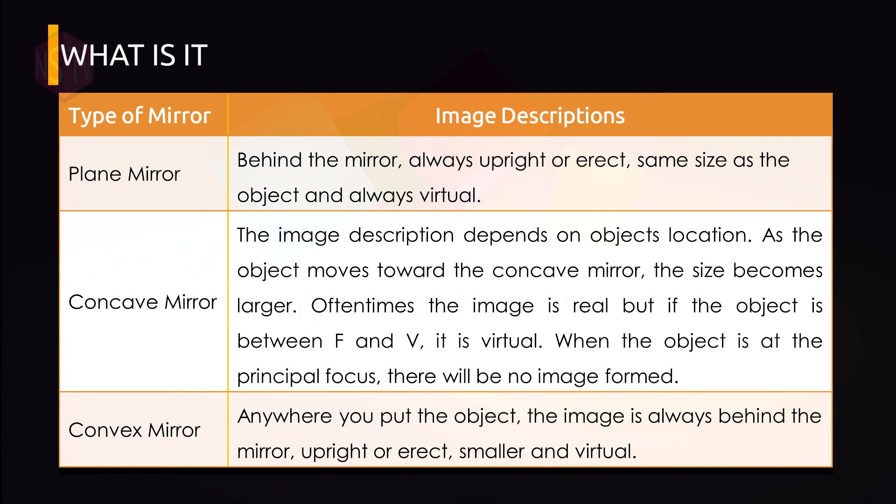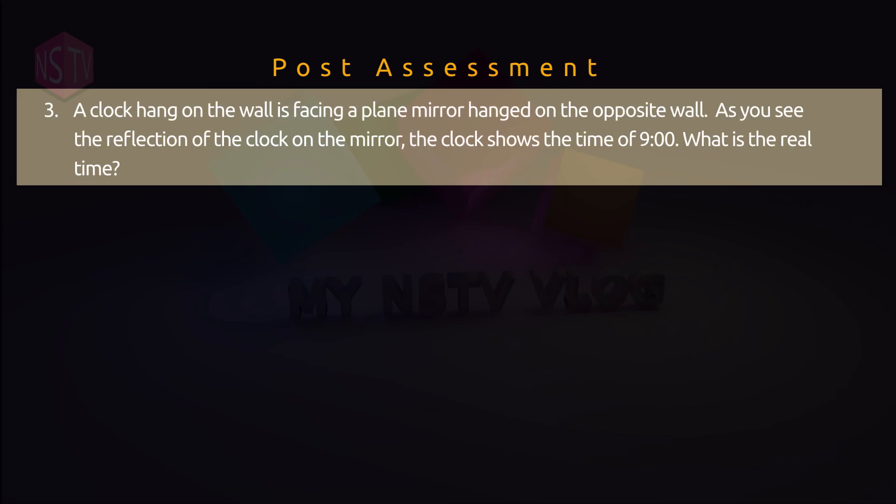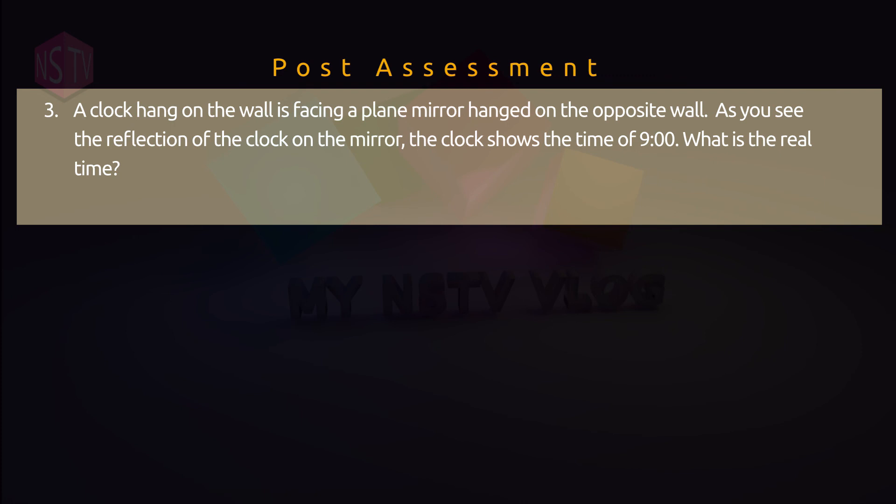So if you really understood the topic, let's have a short evaluation. So can you get your post-assessment in Science 10, Module 3? Use the answer sheet provided. So this is a bonus for you, my dear students. So let's have the first one. Refer to number 3 in your post-assessment. A clock hang on the wall is facing a plane mirror hang on the opposite wall. As you see the reflection of the clock on the mirror, the clock shows the time of 9 o'clock. What is the real time? The answer is 3 o'clock. Good job.